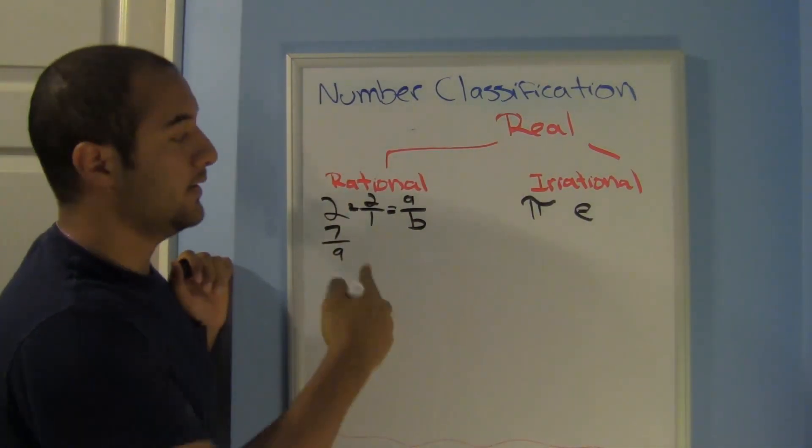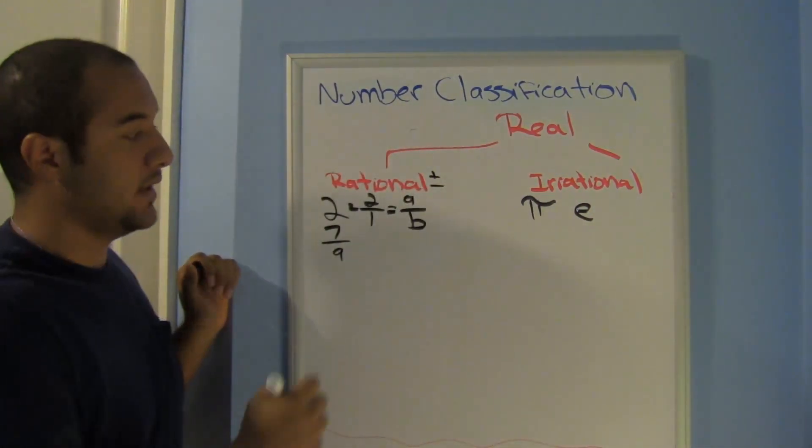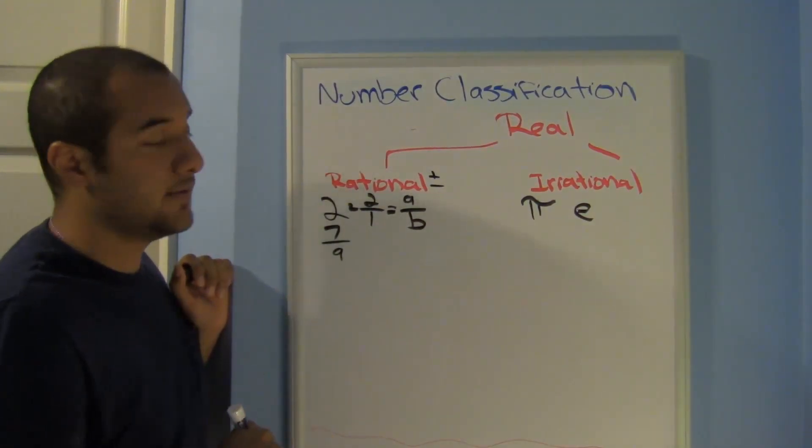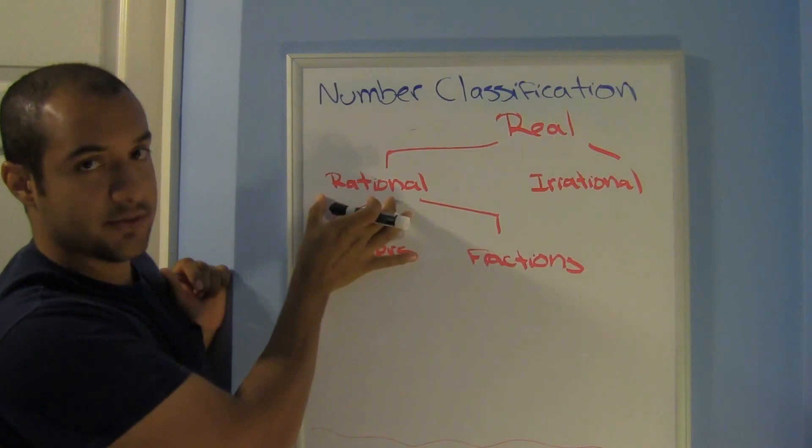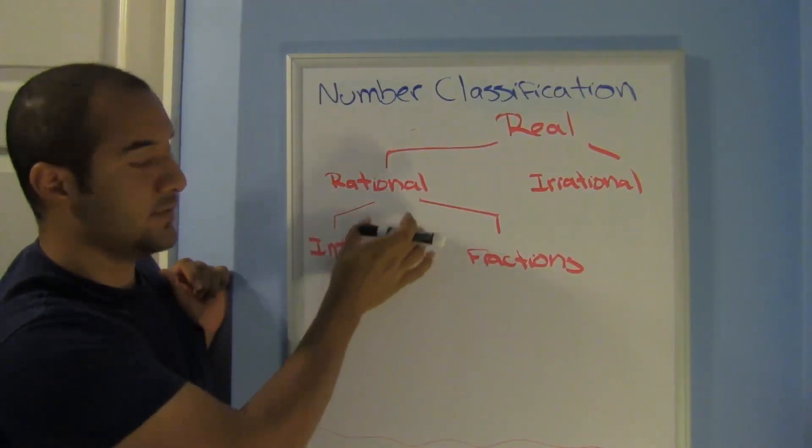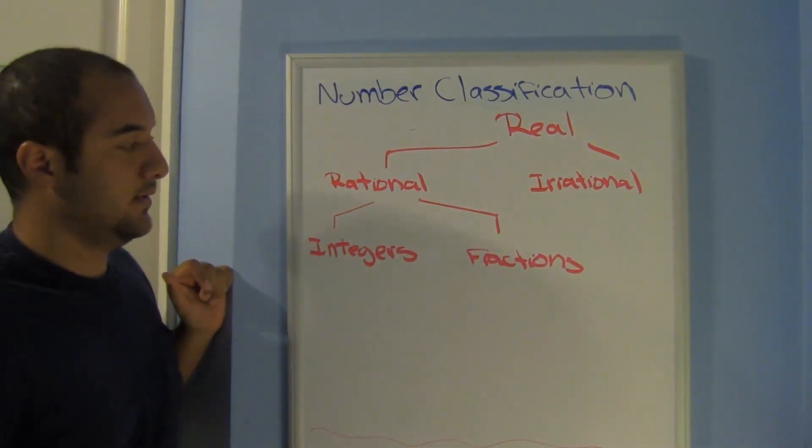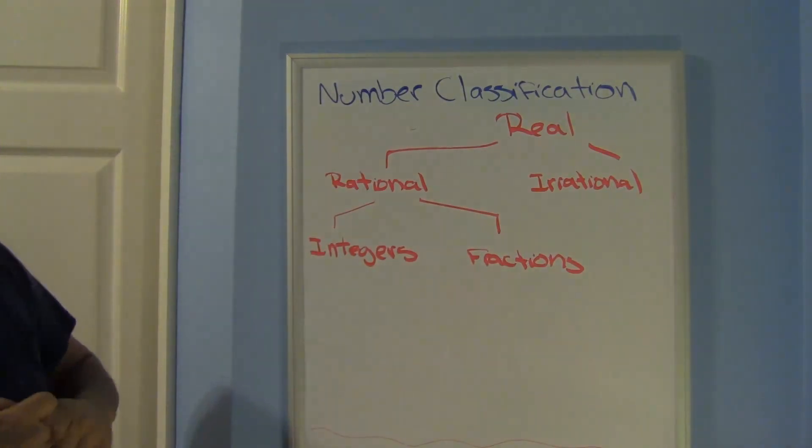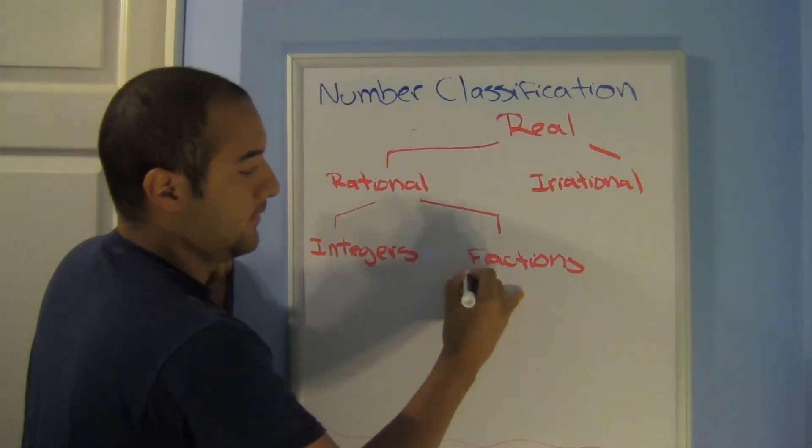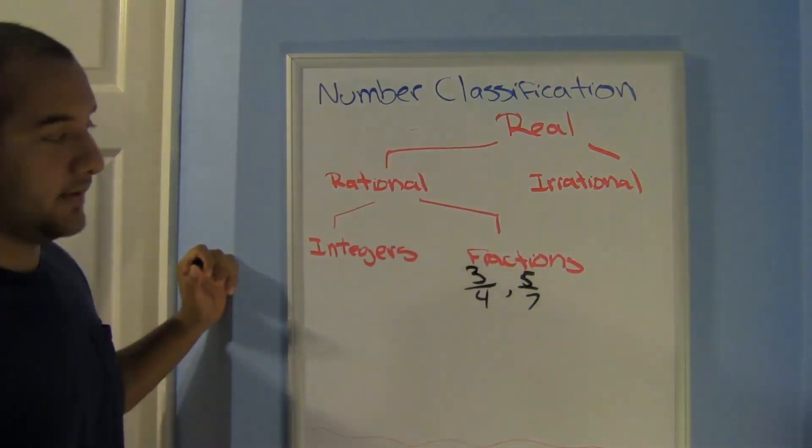By the way, this does include positives and negatives. So positive and negative fractions. And you're good. The next ones you have are from the rational. We don't keep going here anymore. From the rational side, we split those into two. We have integers and fractions. So fractions, you already know all of those. 3 over 4, 5 over 7, no big deal.